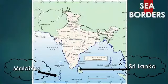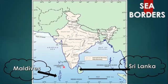Then we have two island border countries. One is Sri Lanka, located near Tamil Nadu, and the other is Maldives, near Lakshadweep Island.